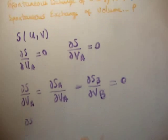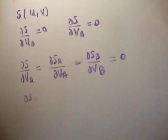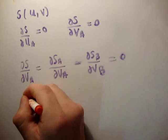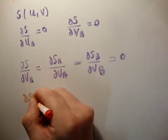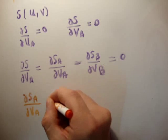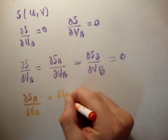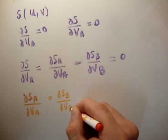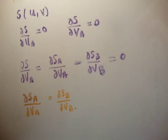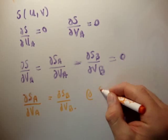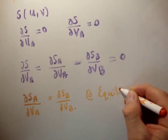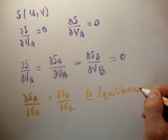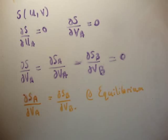That means the change of entropy of A with respect to the volume in A is equal to the change of entropy in B with respect to the volume in B. And that's at equilibrium. So when we can exchange volume, we also have this particular expression for governing equilibrium.